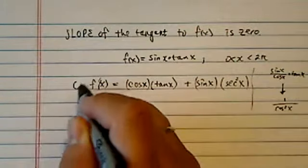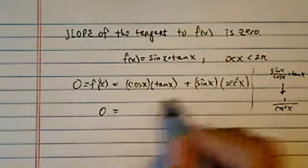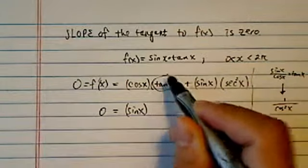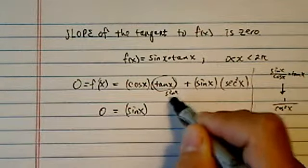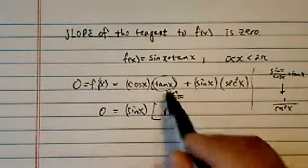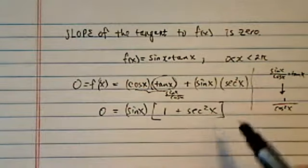So we have to set this one equal to zero, then we have zero equal to, let's put the sine x out, because for this one, it's really sine x over cosine x, the cosine cancels out, and then we left it with one for the first term, plus secant squared x.